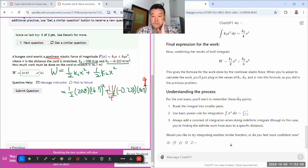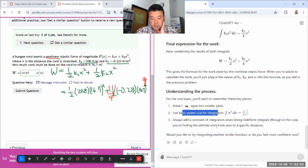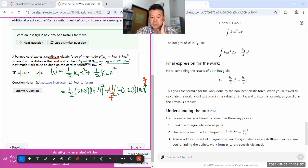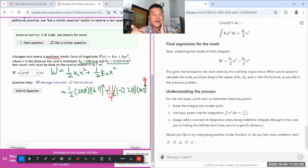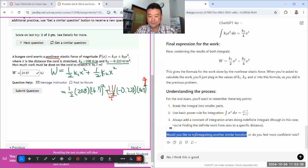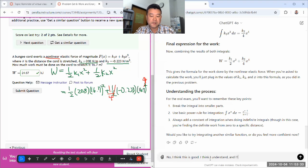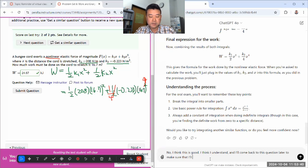You can do it as two separate integrals. The first term, this is something you should have memorized as power rule. Hopefully seeing this reminds you from your calculus. If you don't understand what this is, then ask. That's really the advantage of generative AI: you can go to really detailed steps that your instructor might assume you know and skip over. I think I understand and I'll come back to this question later to make sure that I'll remember.